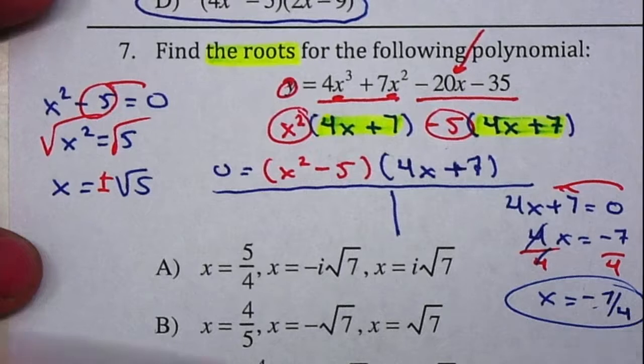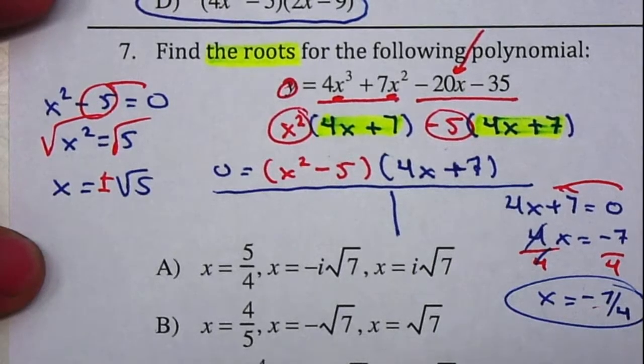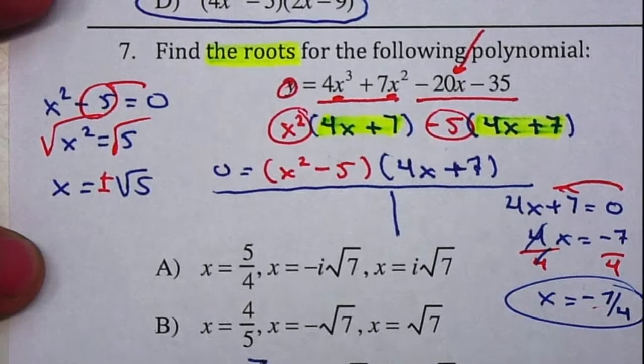So the answer is negative 7 over 4 and plus or minus square root of 5. That's letter C.